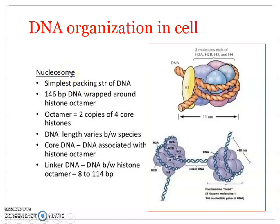In a eukaryotic cell, the DNA gets associated with different kinds of proteins. The histone proteins are the most important ones, and it forms the next level of complex structure known as chromatin. A DNA duplex gets associated with proteins to form the chromatin, and this chromatin is further organized into a more compact structure referred to as a chromosome. The first step is the formation of a nucleosome, where DNA gets wrapped around the histone core.